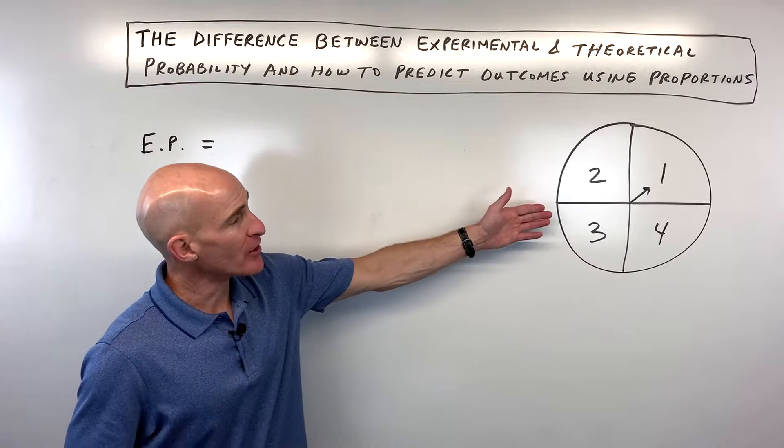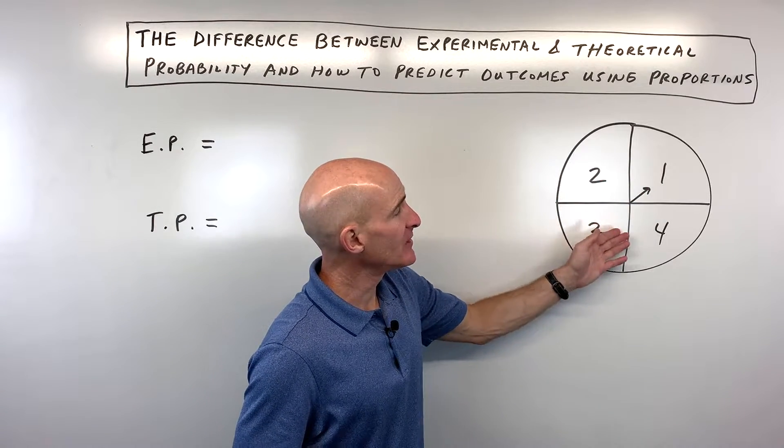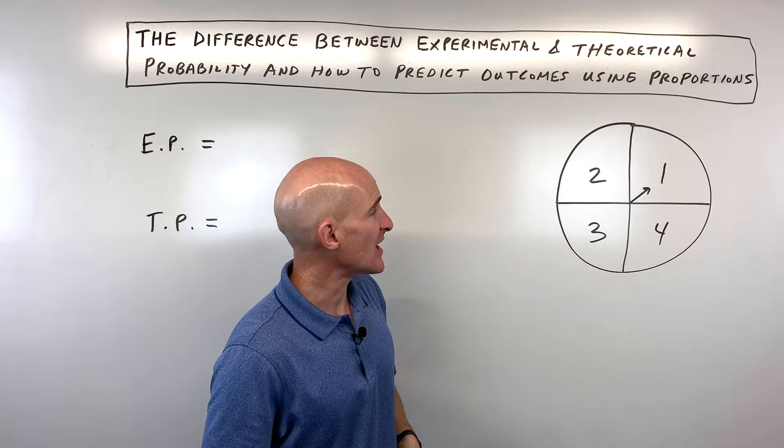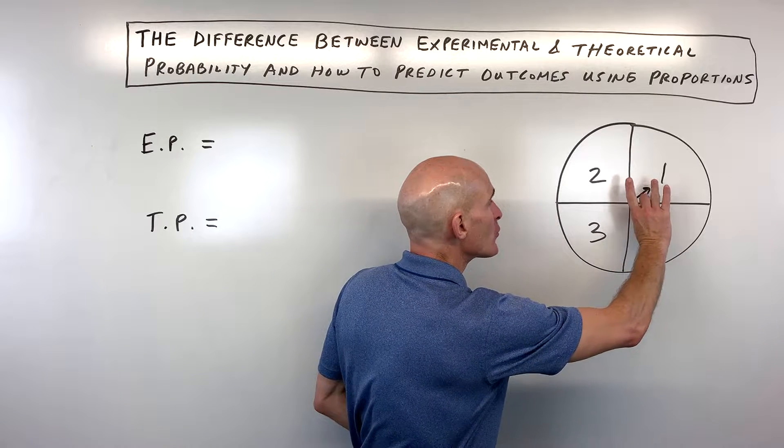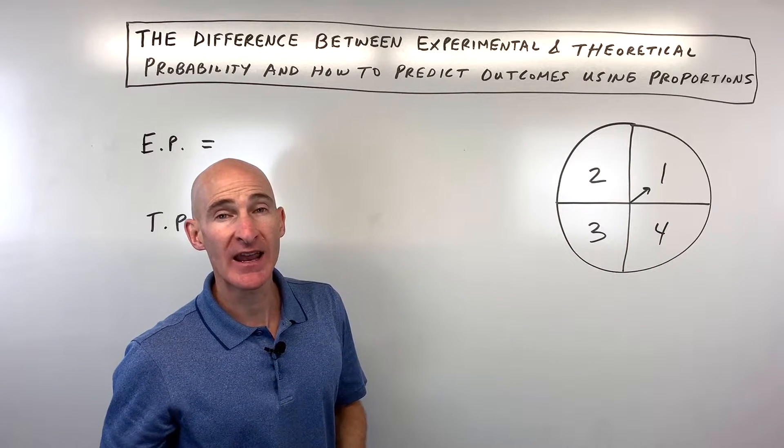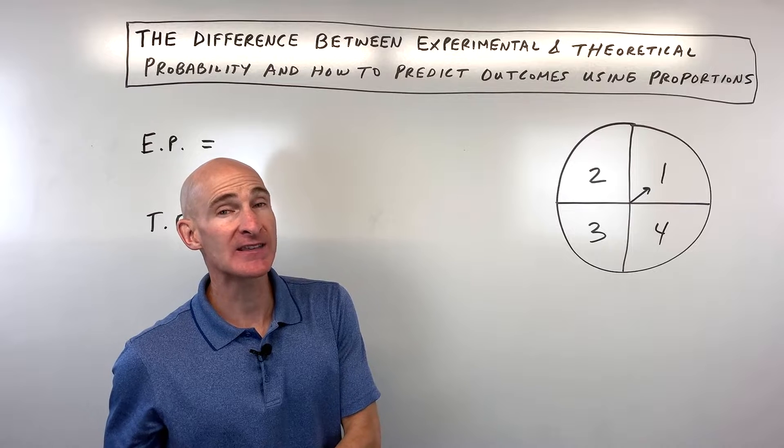Let's take an example here like a spinner. Imagine if it's evenly divided between these four sections, and we take that spinner and we spin it and we say, what number does it land on? And what's the probability that it lands on that number?